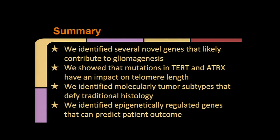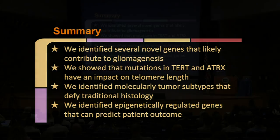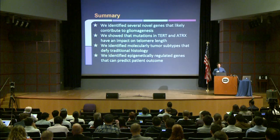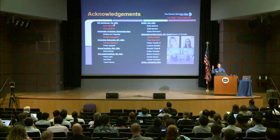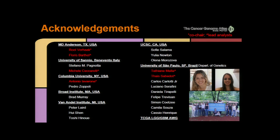In summary, four major points: We identified several novel genes that likely contribute to gliomagenesis. We showed that mutations in TERT and ATRX have an impact on telomere length. We identified molecular tumor subtypes that defy traditional histology. And we identified epigenetically regulated genes that can predict patient outcome. I want to acknowledge all the key people who have worked on this project since 2006. Leading this project right now are myself, Roel Verhoek, and Antonia Iavarone, as well as Flores, Michele, and two of my students, Tachiani Malti and Thais Abidaci, who have done extensive work on the epigenetics.